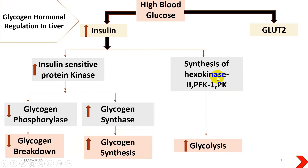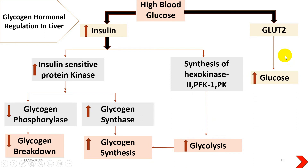The insulin effect will also increase glycolysis with the help of those three regulatory enzymes. If there is no further ATP requirement, additional glucose will be converted into glycogen production. GLUT2 will also increase the amount of glucose inside the cells, which will further enhance the glycolysis process. Overall, high glucose levels in the blood will result in decreased glycogenolysis, enhanced glycogenesis, and enhanced glycolysis.